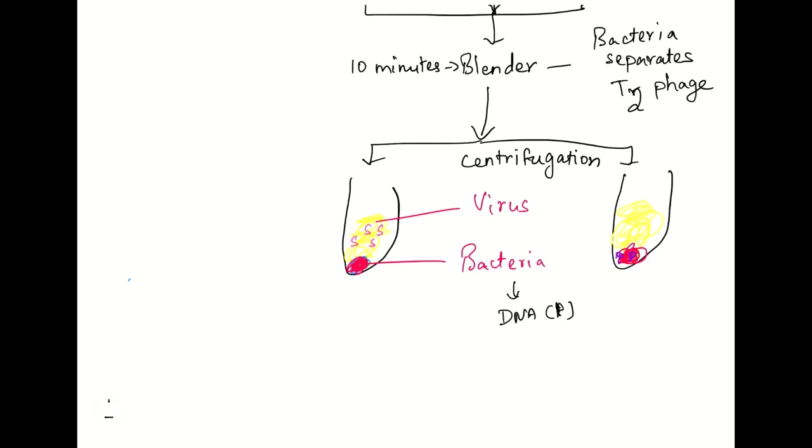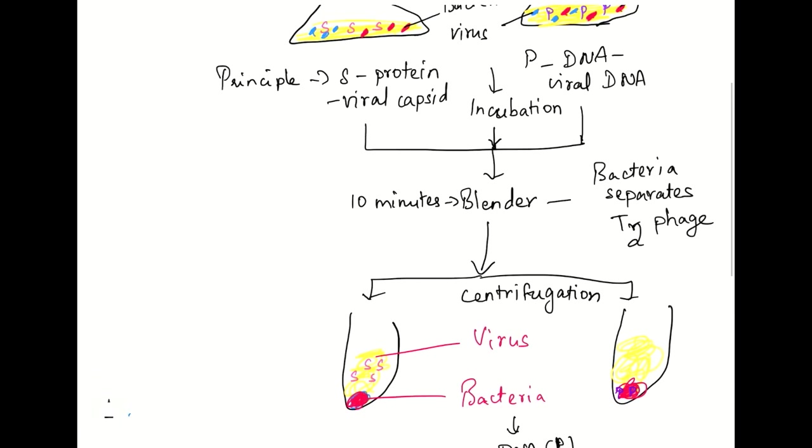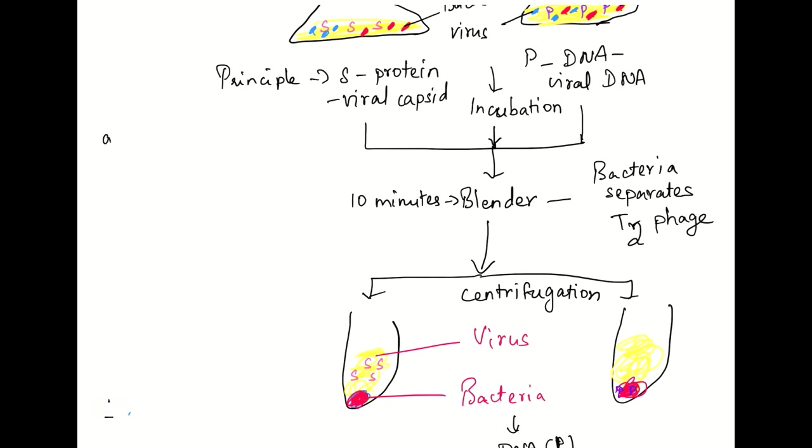This is the experiment performed by Hershey and Chase that showed that DNA is the genetic material. In the given options we talk about the enzyme DNase. DNase enzyme will hydrolyze the DNA by breaking the phosphodiester bond.